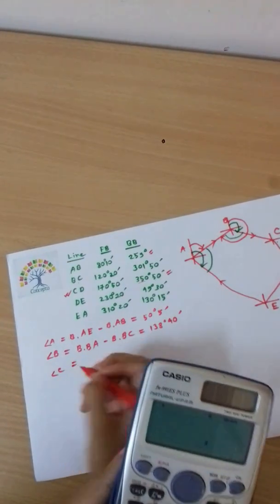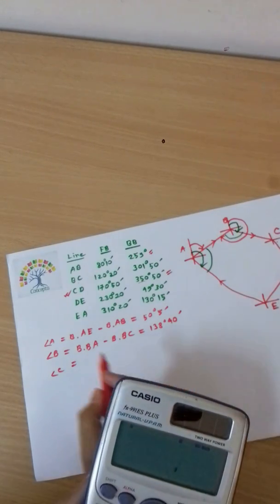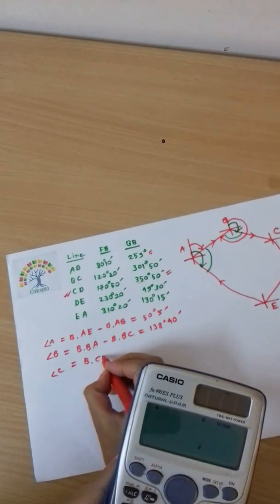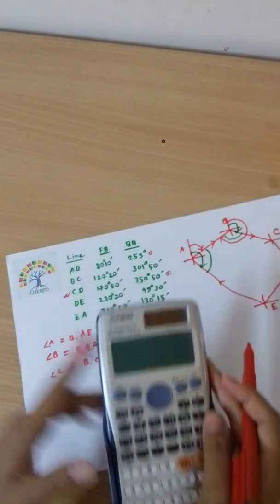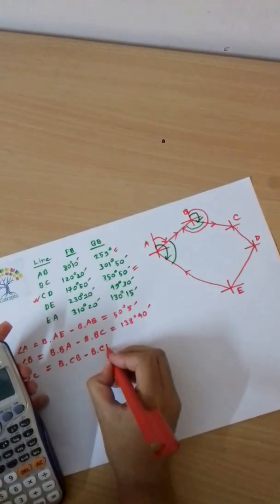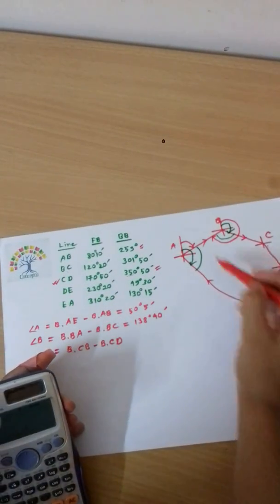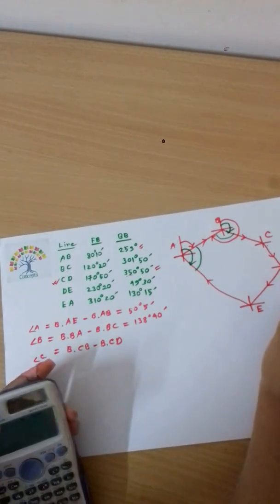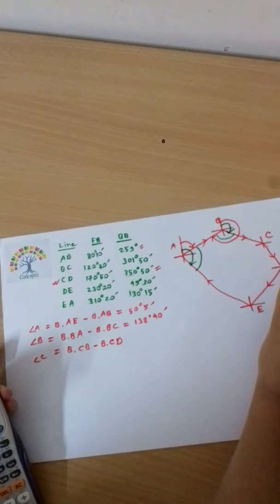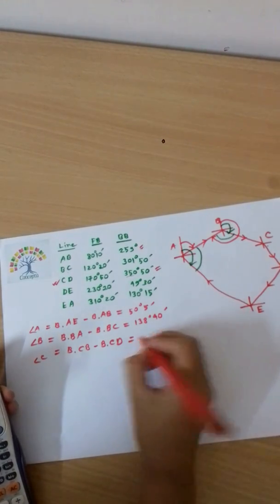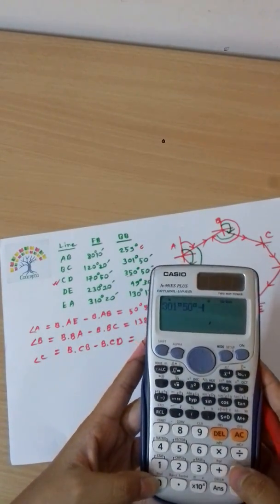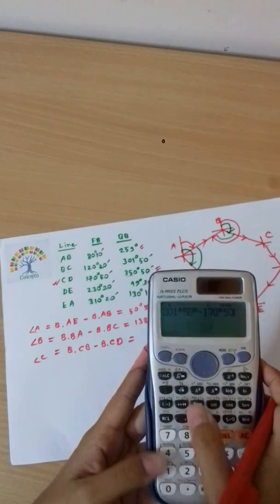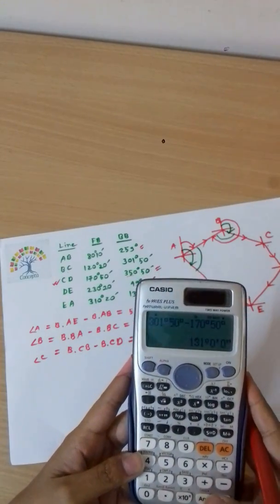For angle C: bearing of CB minus bearing of CD. This is a clockwise angle, so bearing of CB at 301 degrees 50 minutes minus bearing of CD at 170 degrees 50 minutes equals 131 degrees.